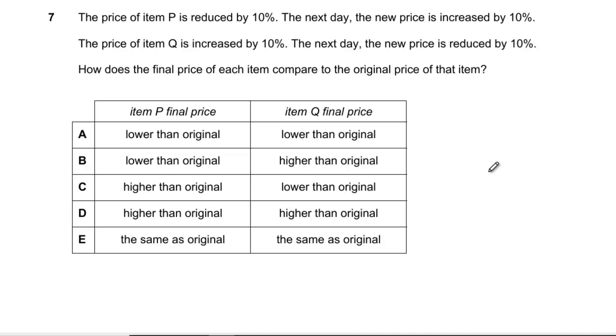Question 7: The price of item P is reduced by 10% then increased by 10%, so it goes down to 90% then up to 99%. Q is increased by 10% up to 110%, then reduced by 10% down to 99%. They're both lower, so that was a really quick one.